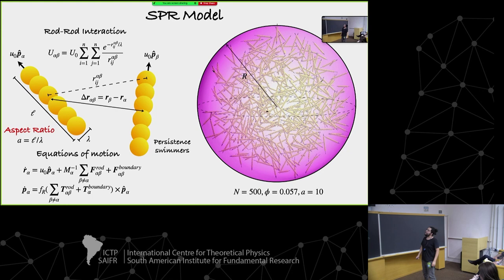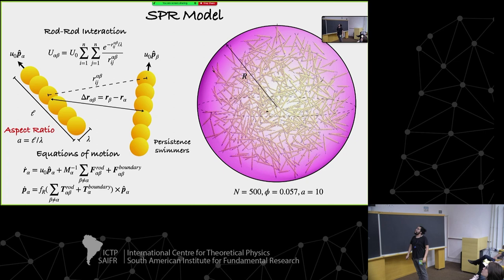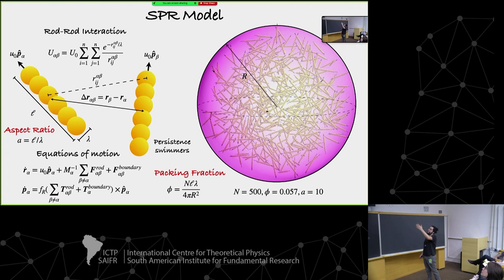We put these rods in a sphere, let them move and interact. We use 500 rods. We will vary the two important parameters: the aspect ratio of the rods and the packing fraction of the sphere.